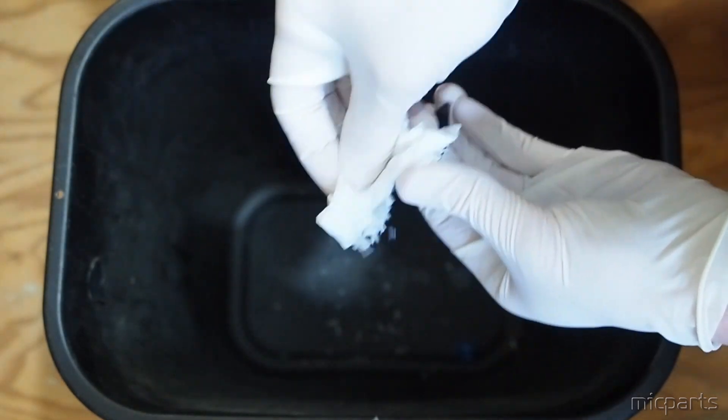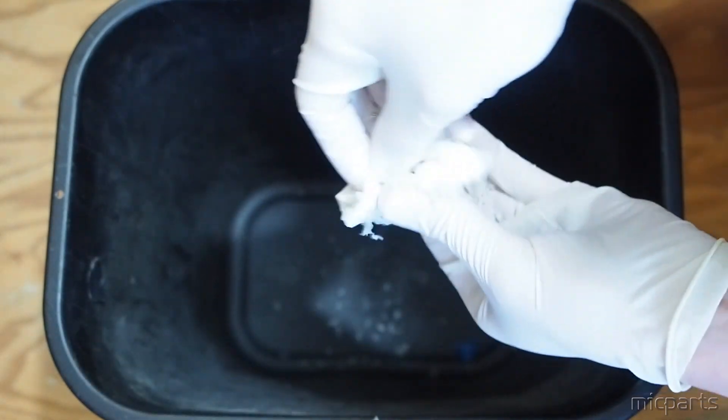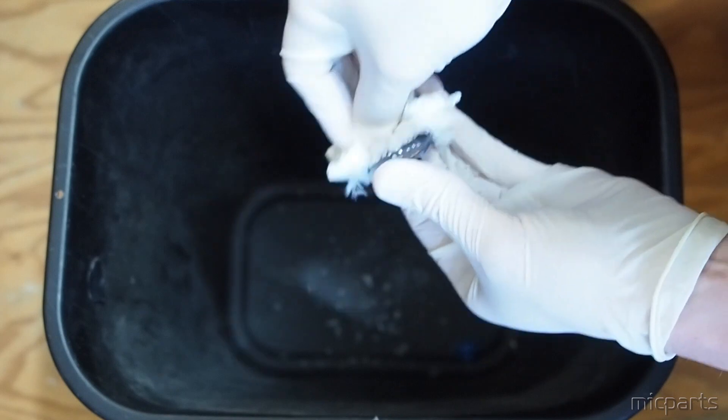Basically what you do is you wet the paper towel with the solvent and you scrub the back of the board. Seems pretty basic, but it is incredibly effective.